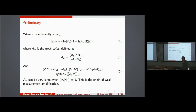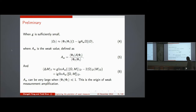Cheng Shi did a lovely piece of work using a variational method to figure out the maximum amplification you can get — that's well worth looking into. As a general rule, if phi_F and phi_I are almost orthogonal, then you can make A_W large and get the weak value amplification effect.